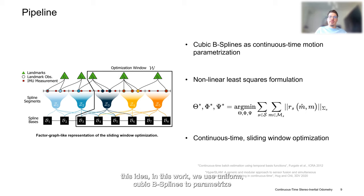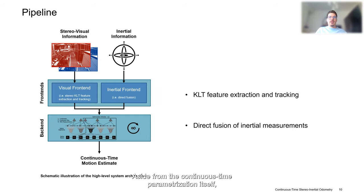Based on this idea, in this work we use uniform cubic B-splines to parameterize our motion estimates and formulate the continuous-time SLAM problem as a nonlinear least squares optimization. In contrast to previous works, which pose this problem as an offline batch optimization, we treat it as an online continuous-time sliding window minimization, illustrated on the left. Compared to conventional approaches, the most striking difference lies with the denser interconnections between motion parameterizing states. Aside from the continuous-time parameterization itself, our pipeline follows the established KLT approach to extract and track visual cues in the image streams and exploits analytically computed instantaneous velocities and accelerations to directly fuse individual inertial measurements. Ultimately, the resulting output is the optimized continuous-time motion estimate.